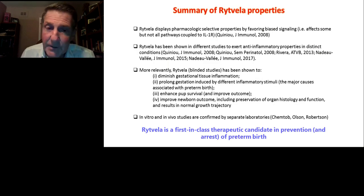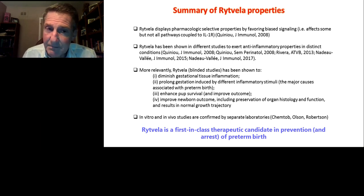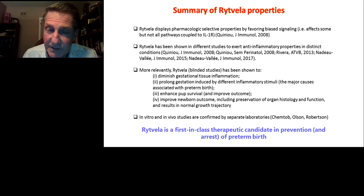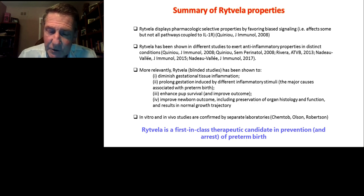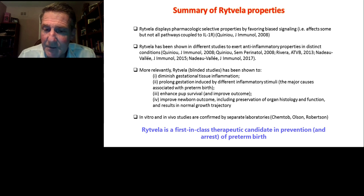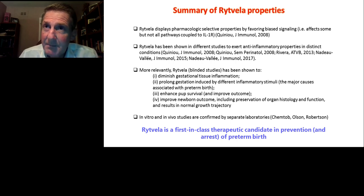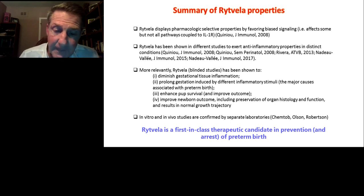In summary, on slide number 34, Rytvella displays pharmacologic selectivity by favoring biased signaling — it affects some but not all pathways coupled to the interleukin-1 receptor, specifically preserving the NF-κB pathway important in immunovigilance. Rytvella has been shown to exert anti-inflammatory properties in distinct conditions. In blinded studies relevant to preterm labor, Rytvella has been shown to diminish gestational tissue inflammation, prolong gestation induced by different inflammatory stimuli, enhance pup survival, improve newborn outcome including preservation of organ histology and function, and result in normal growth trajectory. In vitro and in vivo studies were confirmed by separate laboratories. Thus, Rytvella is a first-in-class therapeutic candidate in the prevention and arrest of preterm birth.